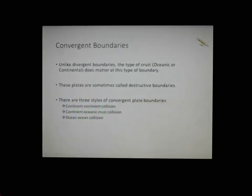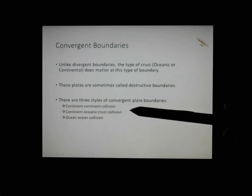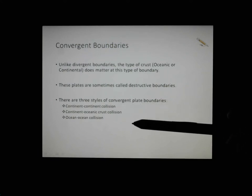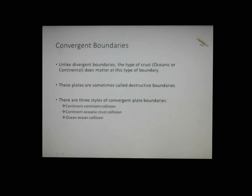Convergent boundaries — remember, the opposite of divergent. With divergent, the type of crust doesn't matter — if they spread apart, you get a volcano. But with convergent boundaries, it does matter what comes together. We have three different types: continent-continent collisions, continent-oceanic crust collisions, and ocean-to-ocean collisions. Sometimes the textbook will call these destructive boundaries, because it will always result in plates being destroyed as they get pushed underneath each other.